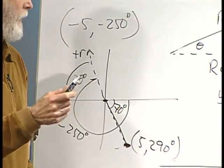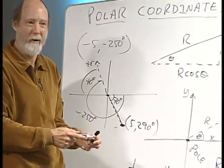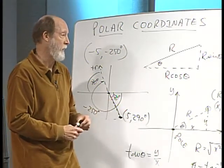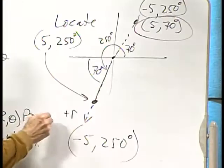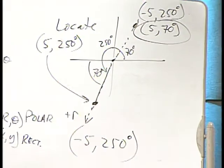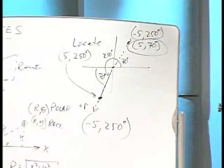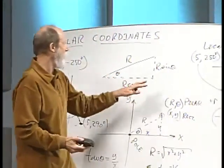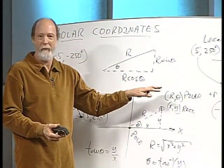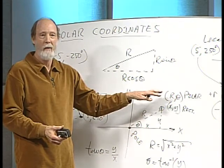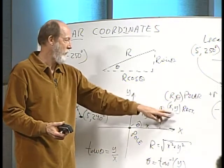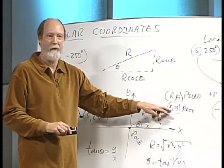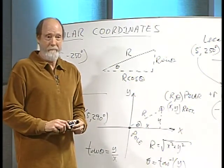Because of the periodic character of trig functions, there are an infinite number of representations possible in polar coordinates — the same thing that comes up with angles in standard position. That's how you plot a point. Now, how do you write an equation in polar form?